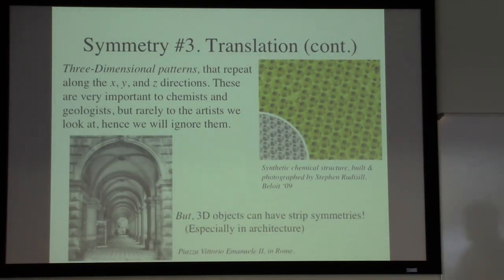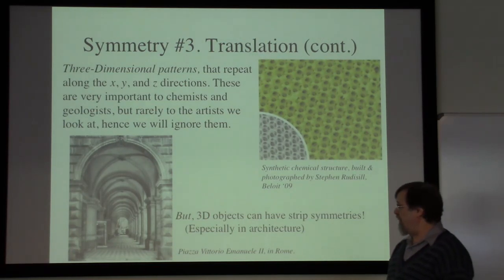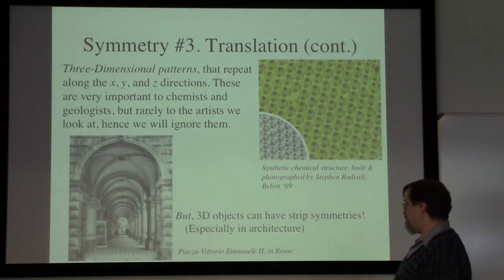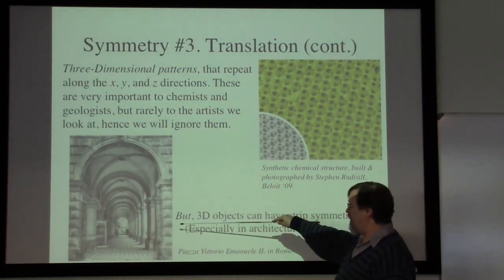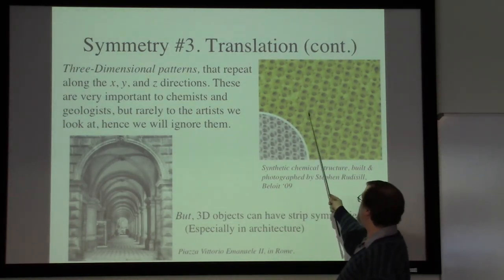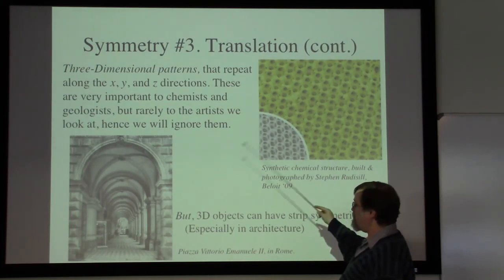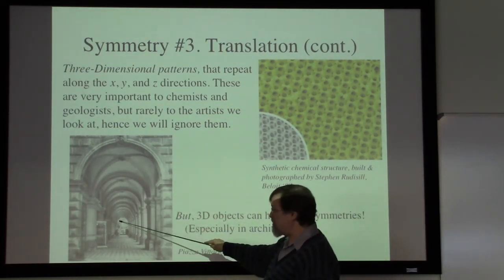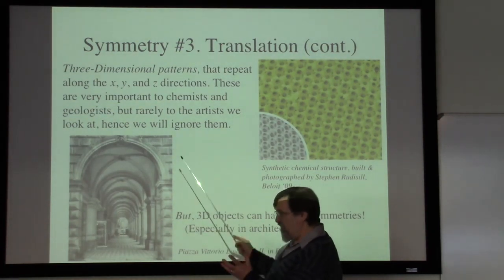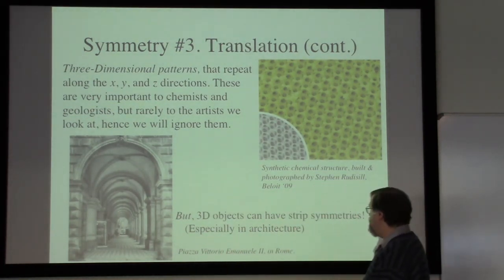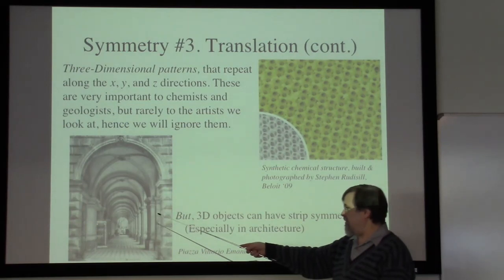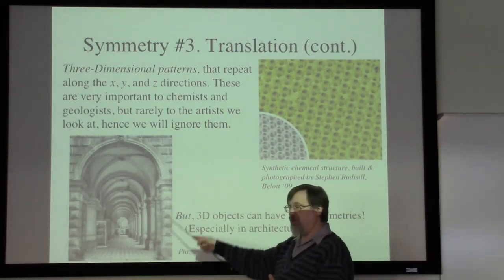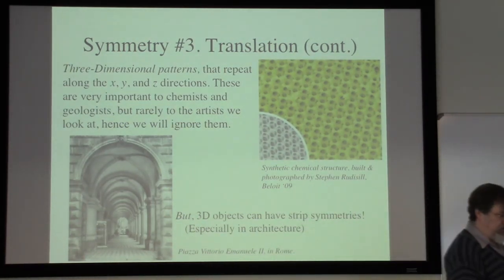There are certainly some three-dimensional objects with the kinds of symmetries we're interested in, especially in architecture. This arcade is fundamentally a three-dimensional object, but all of the translations of these arches are moving in one straight direction, so although it's three-dimensional, the symmetries here count as one of the strip symmetry types.